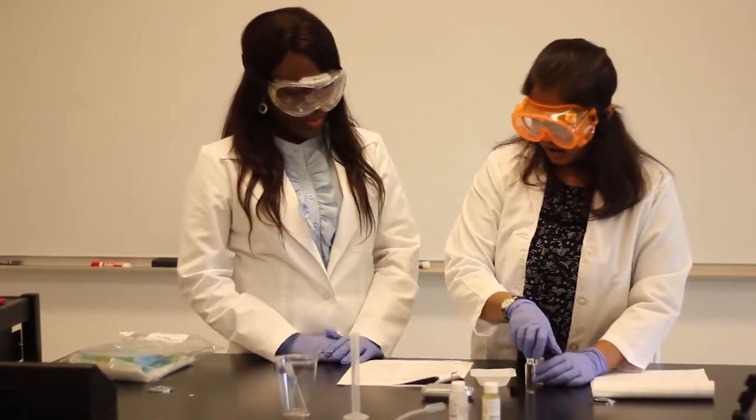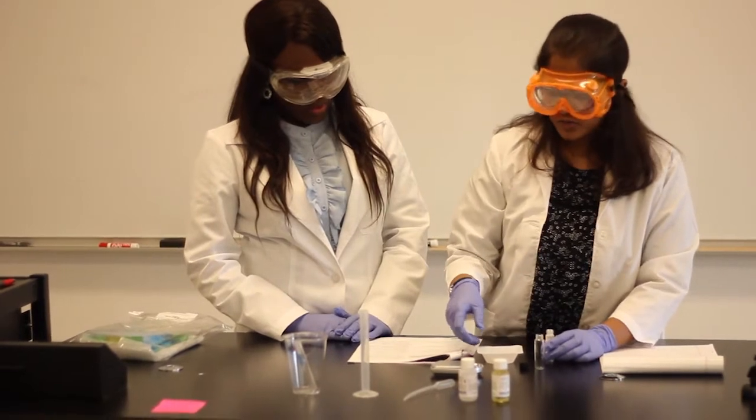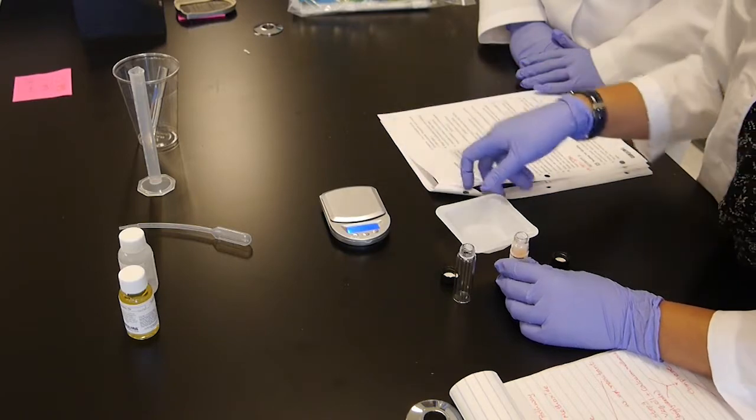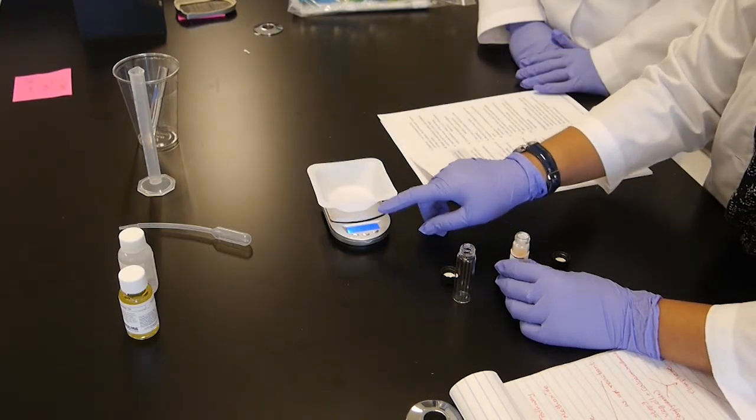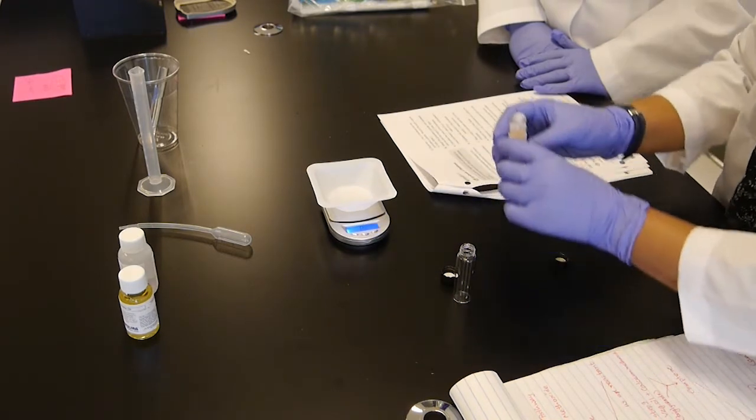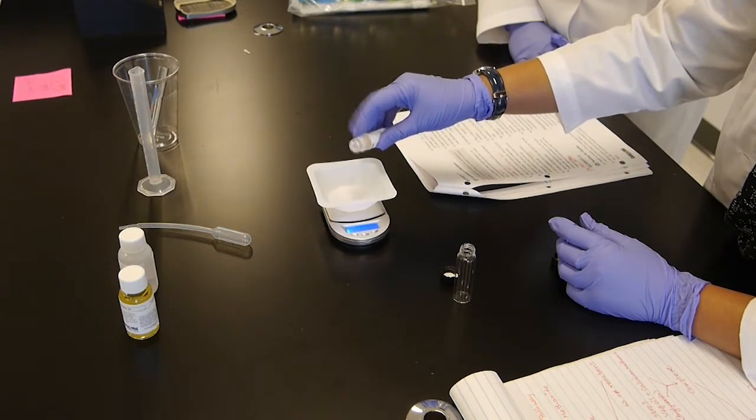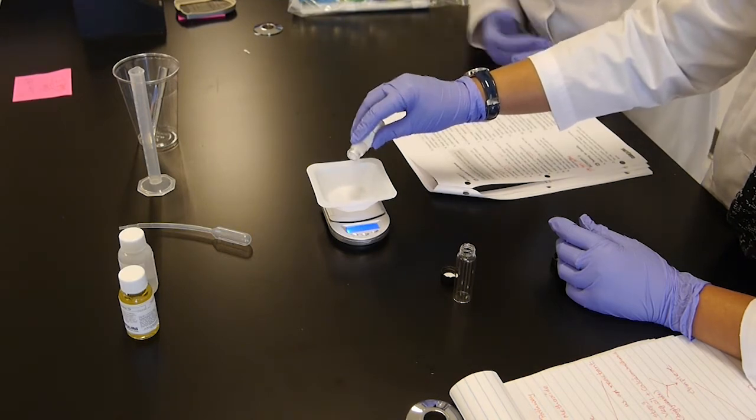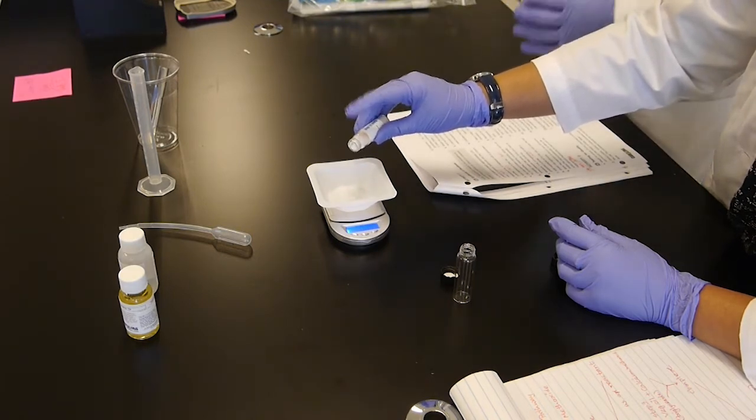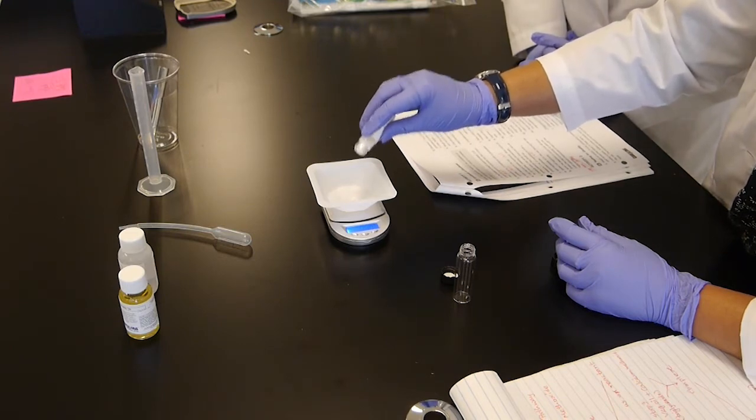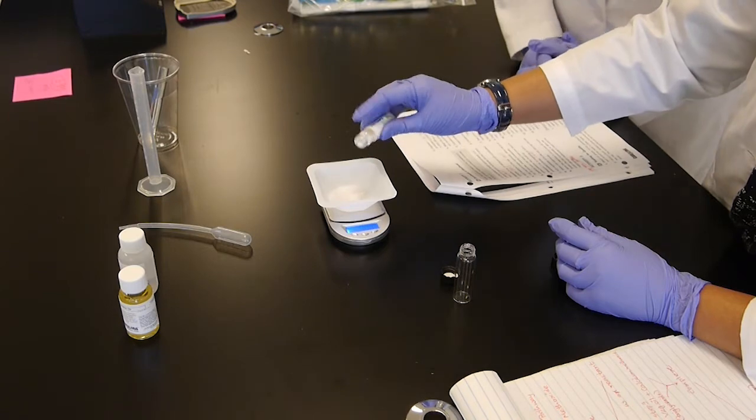So first of all, we're going to weigh out about 0.02 grams of calcium hydroxide in the weighing balance. So let's put the weighing pan right here. Tare it. And I'm going to try to take about 0.02 grams. The purpose of taring is to make sure that you're negating the mass of the weighing boat. And since we weren't provided with a spatula, we have to use this method to transfer the calcium hydroxide into the dram vial.